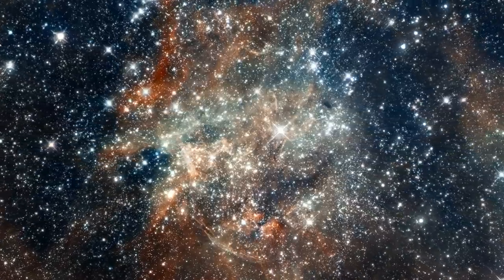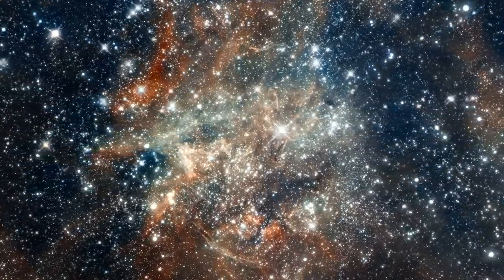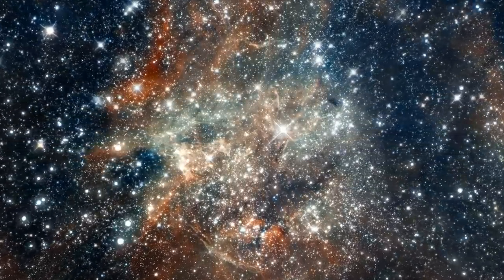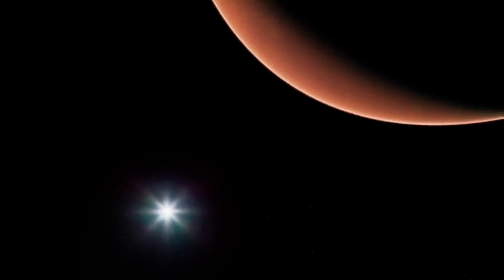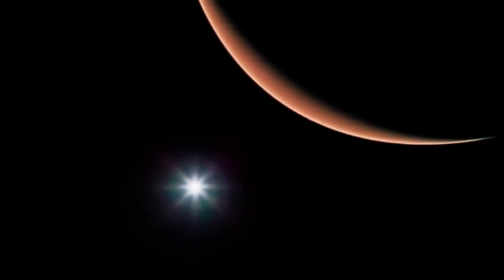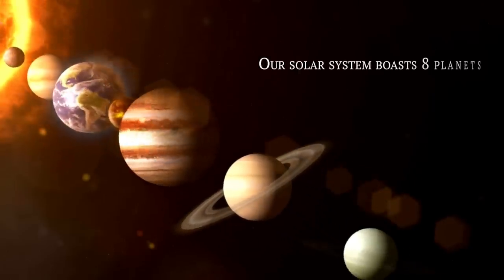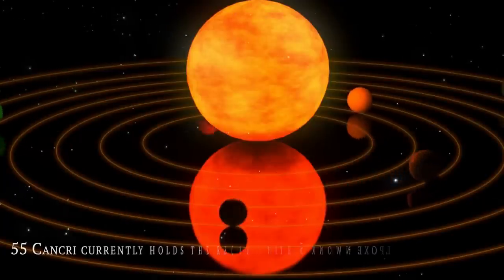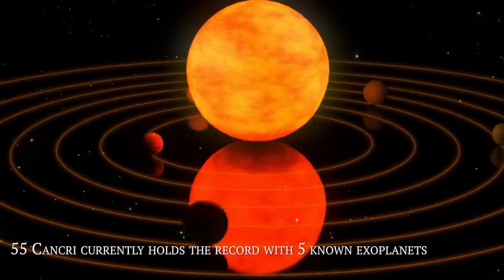Starting with the stars themselves, both 55 Cancri system and our solar system have stars of similar mass and age. They also share the characteristic of hosting multiple planets. Our solar system boasts eight planets, while 55 Cancri currently holds the record with five known exoplanets.